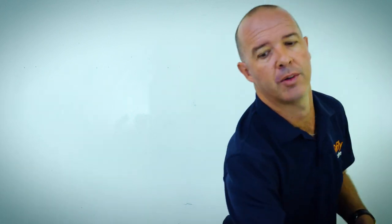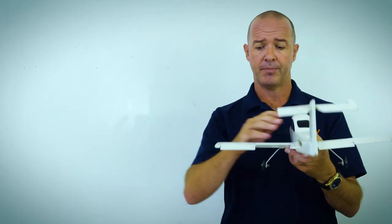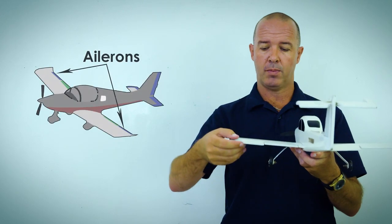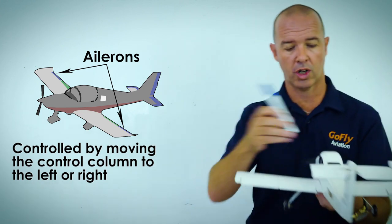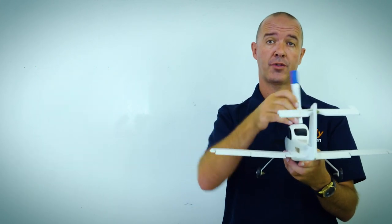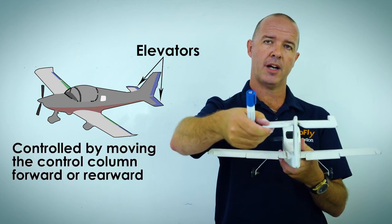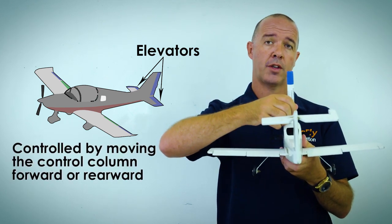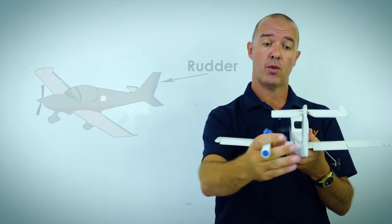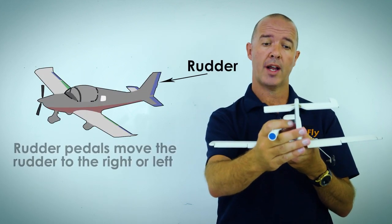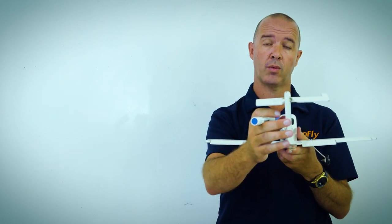Let's go to our aircraft model to have a look at our control surfaces today. On the outward part of the wing, we have what we call our ailerons, and they're controlled by our control column inside — we move the control column to the left or right. We also have our elevator at the back of the aircraft, controlled by moving the control column forward and rearward. We also have our rudder, controlled with our rudder pedals by moving them to the right or left.